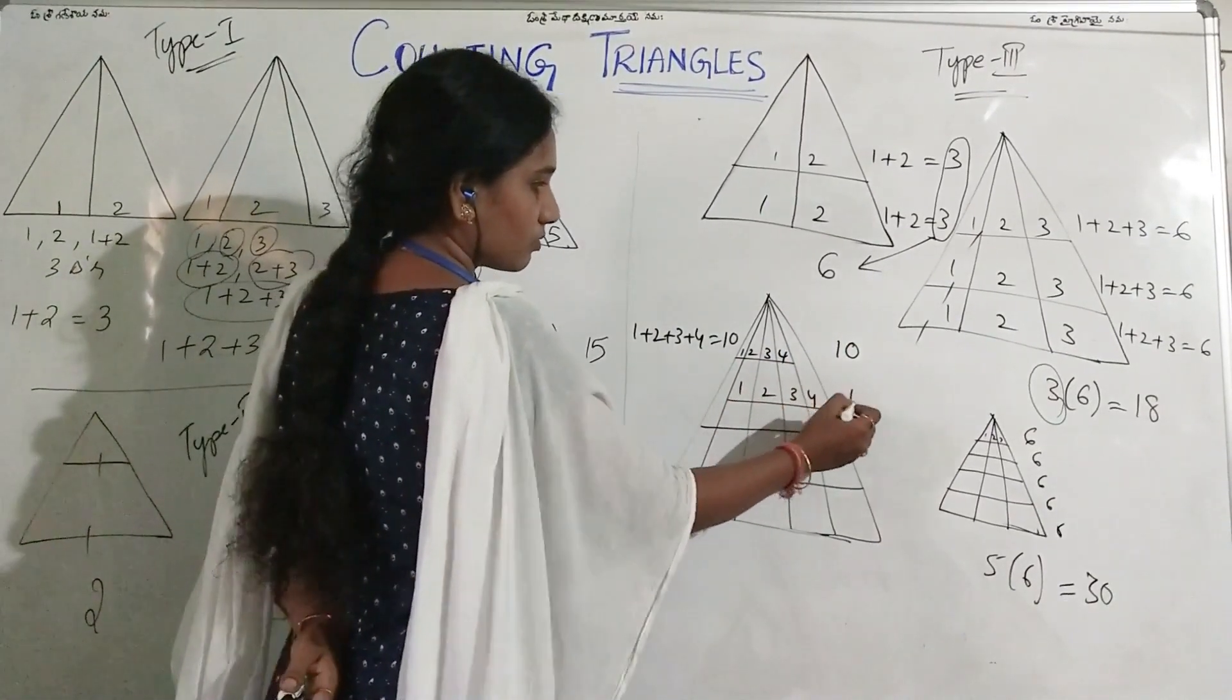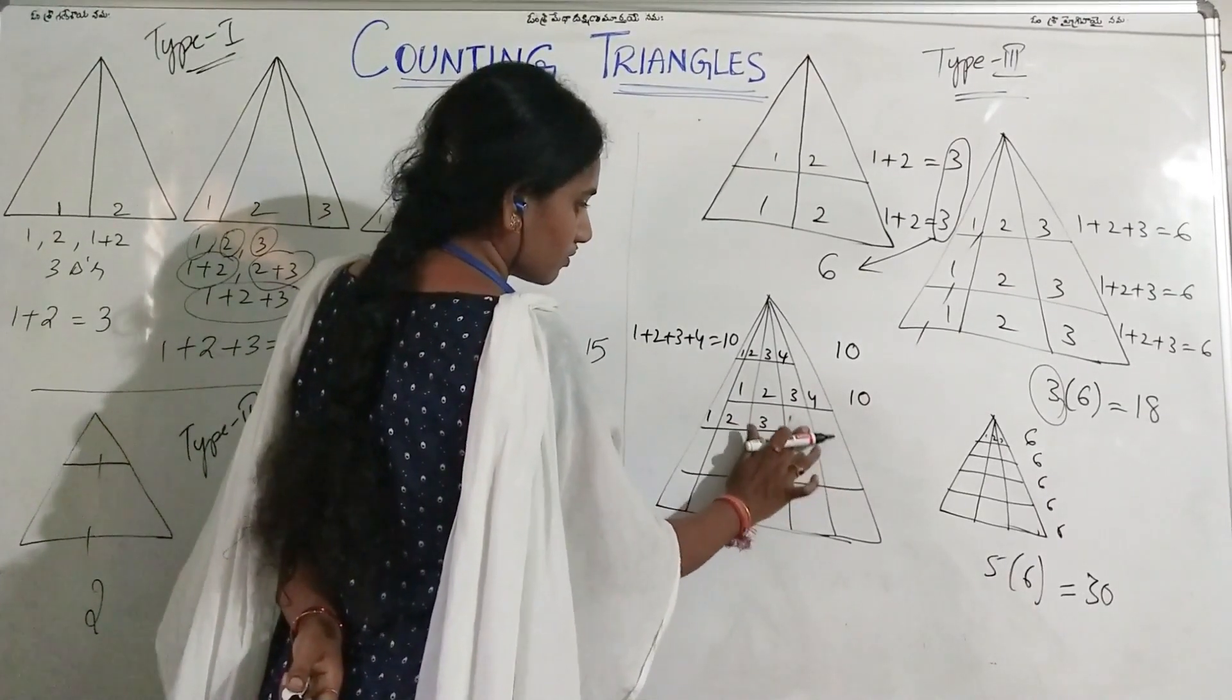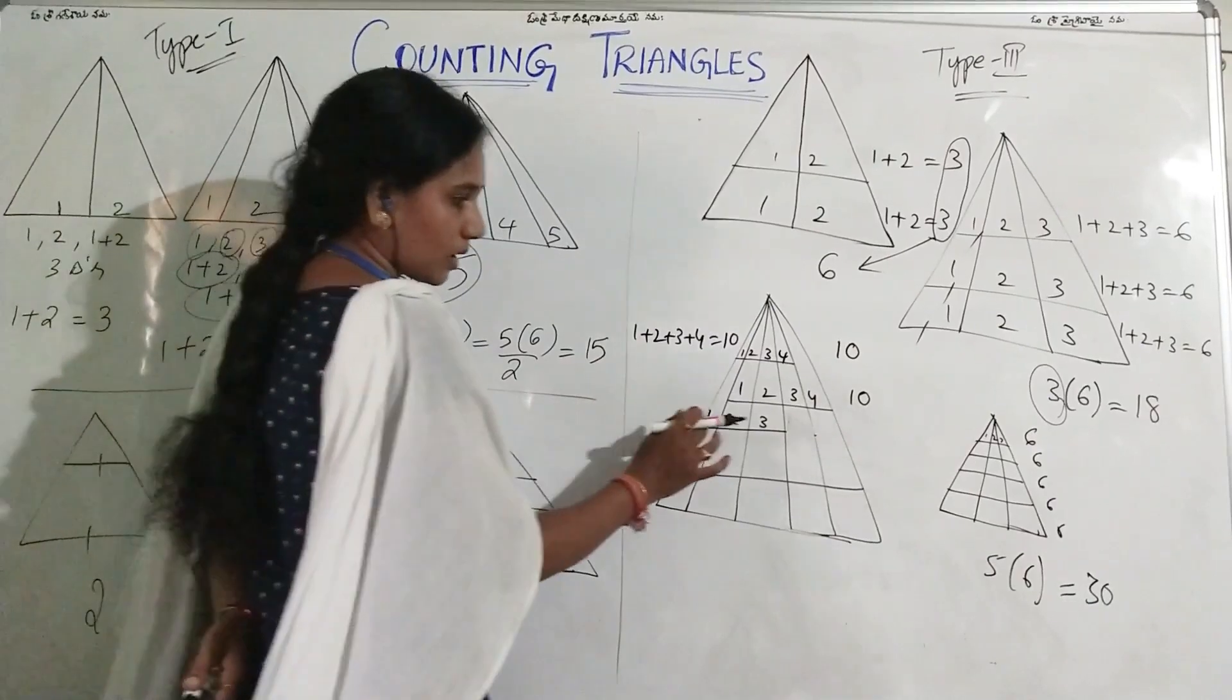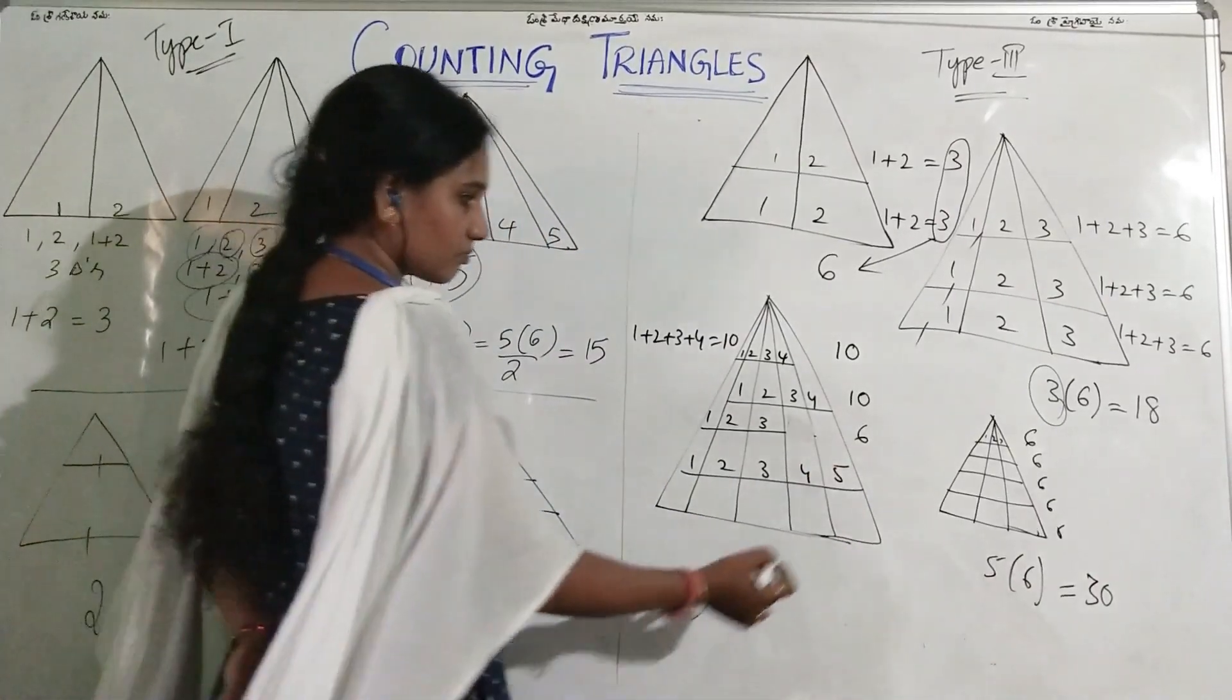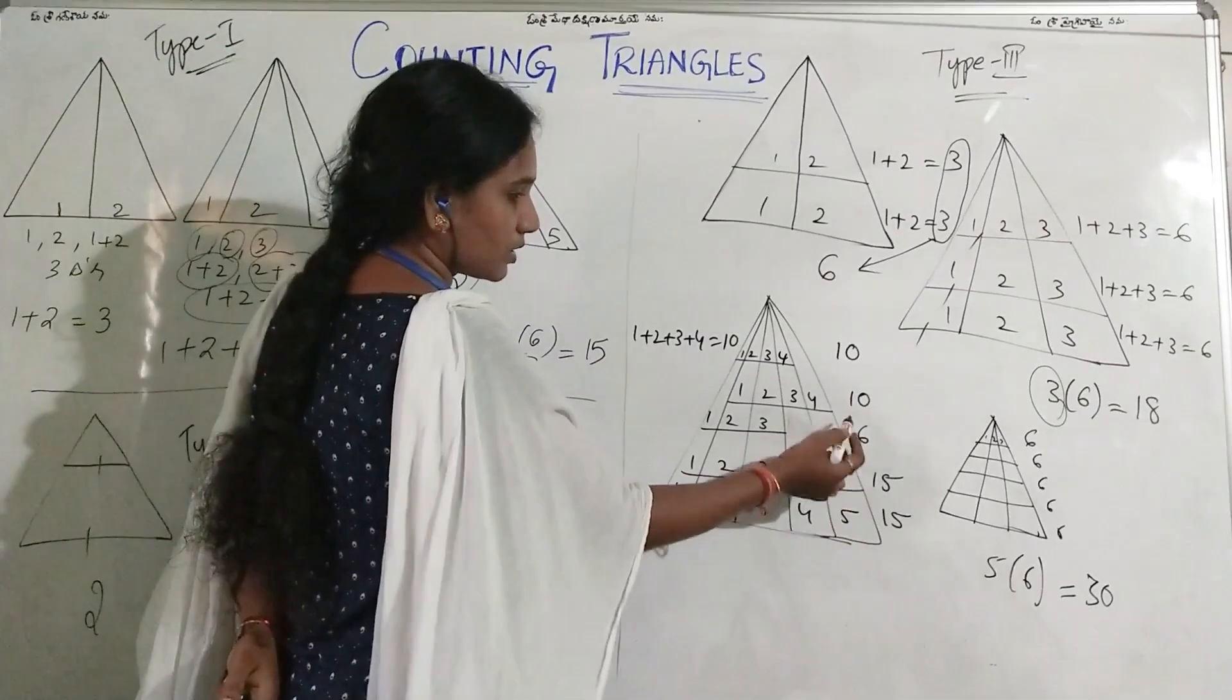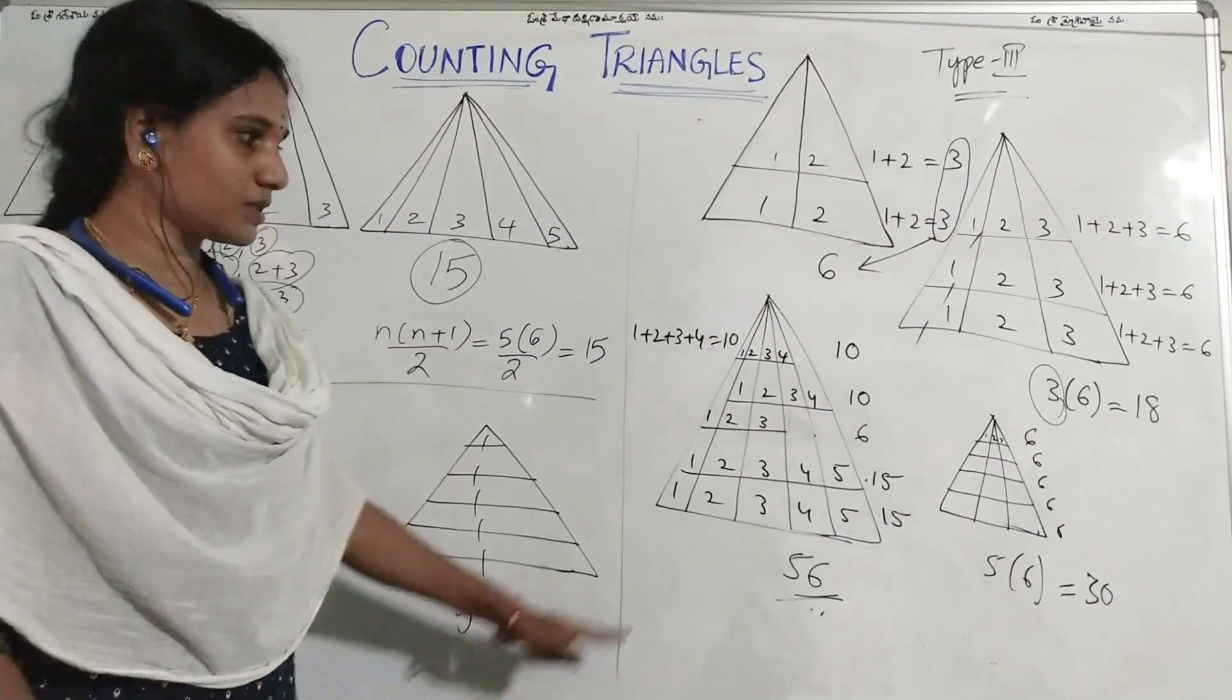Again here, 1 plus 2 plus 3 plus 4, which is also equal to 10. Again 1, 2, 3, 4. Now let us take only this figure up to here. So here, let us assume that there is no line. I am taking this. So 1 plus 2 plus 3 is 6, and 1 plus 2 plus 3 plus 4 plus 5, which is 15. And again 1, 2, 3, 4, 5, which is again 15. Now add sum of this: 15 plus 15 is 30, 30 plus 20 is 50, plus 6 is 56. So total number of triangles formed here is 56.